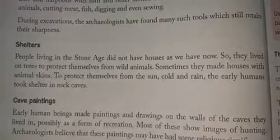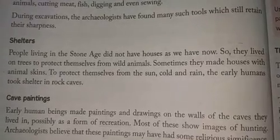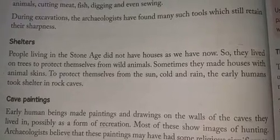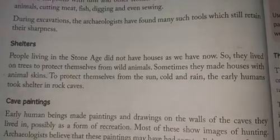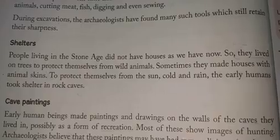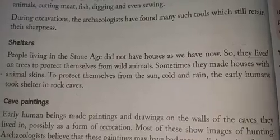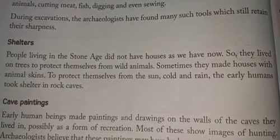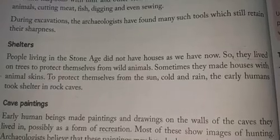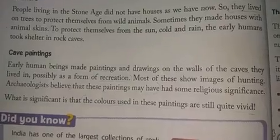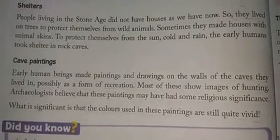Now let us see where these early people lived. They did not have houses. They lived on trees to protect themselves from wild animals. They also made shelters with animal skins, and they took shelter in rock caves to protect themselves from the sun, cold, and rain.